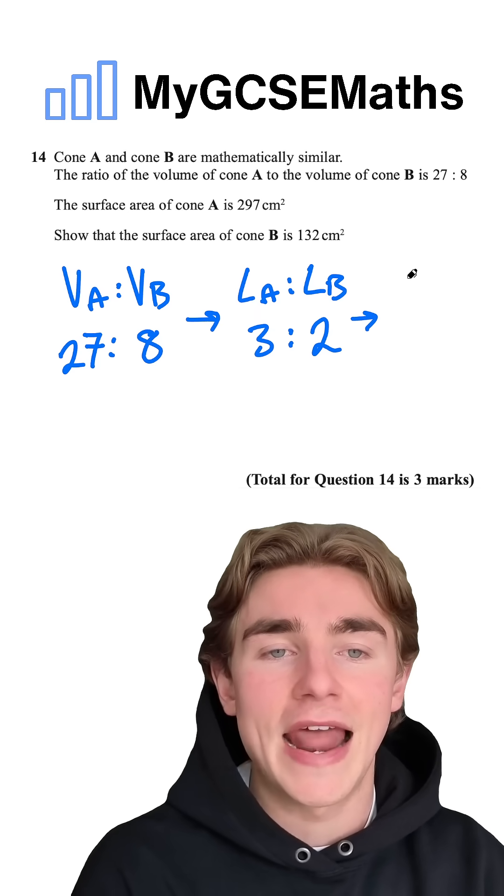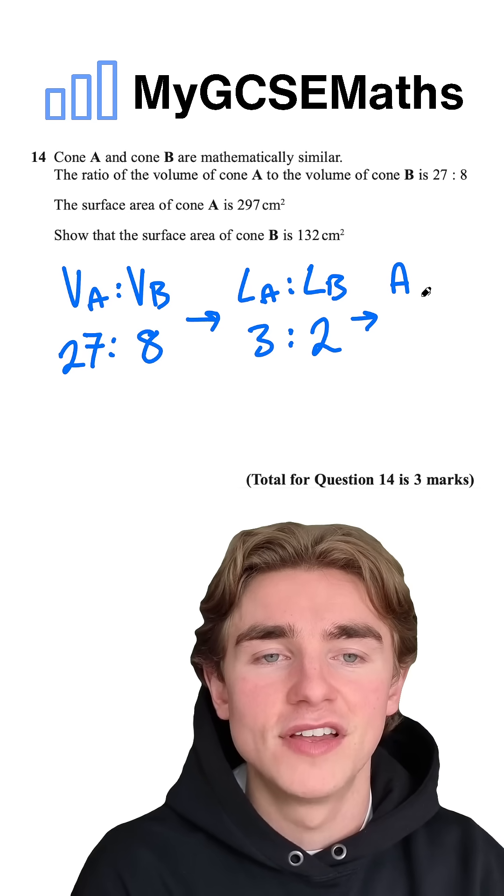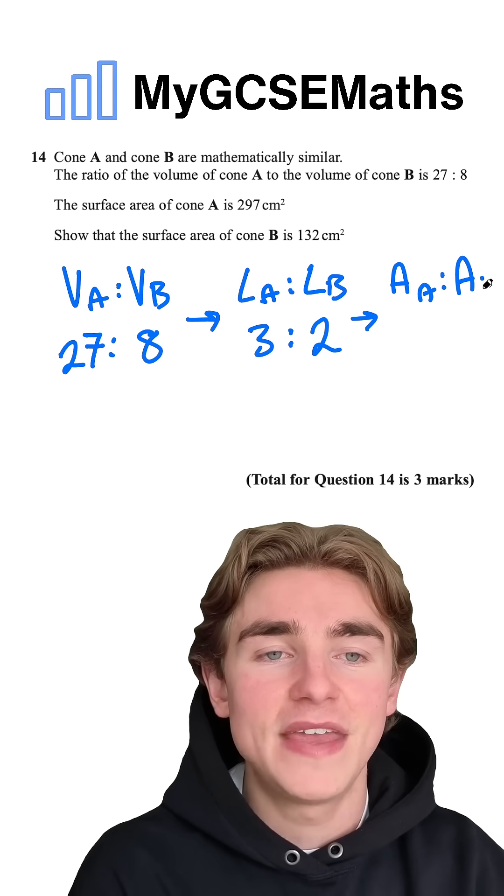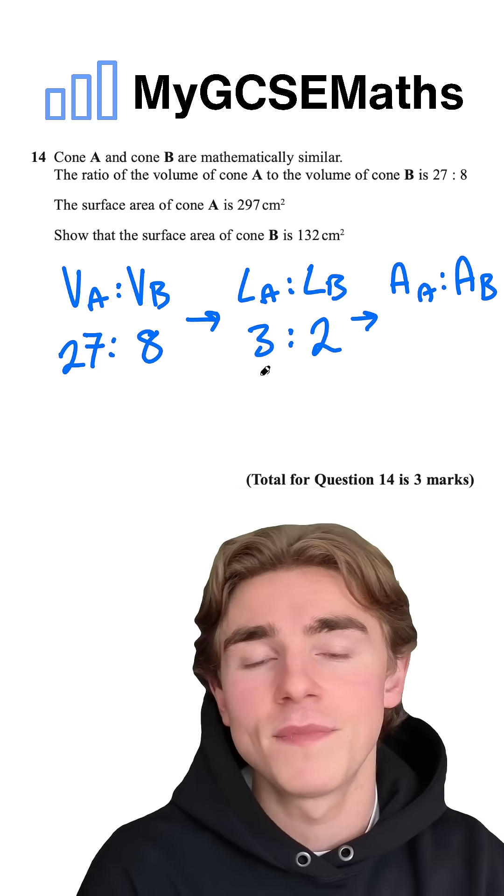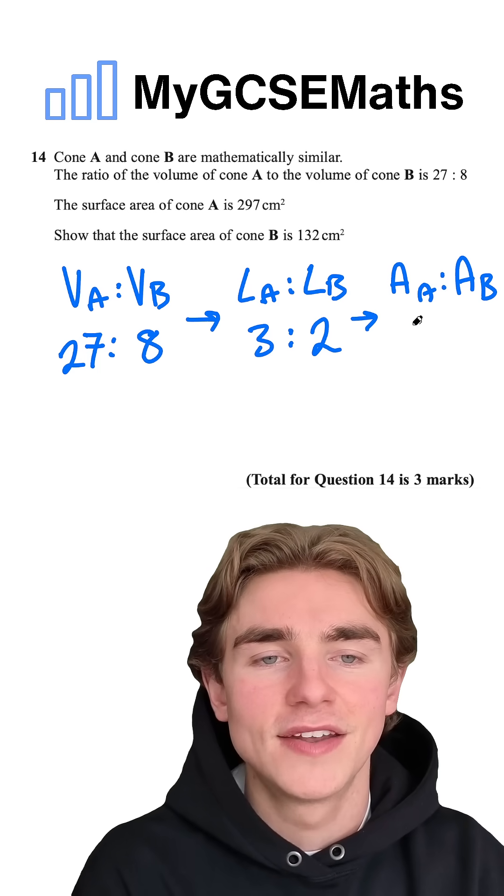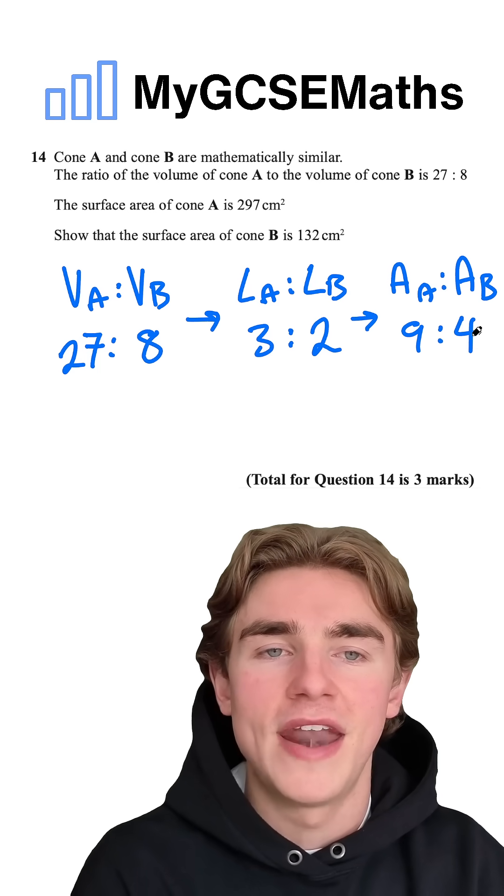Now that we've got our ratio in lengths, we can work out our ratio in areas, the area of A to the area of B. To get this, we're going to square our ratio in lengths. So we have 3 squared to 2 squared, which is 9 to 4.